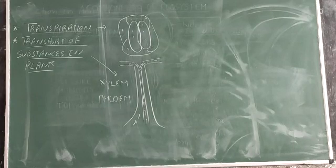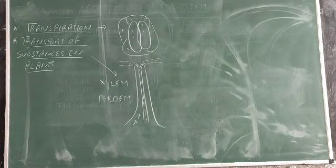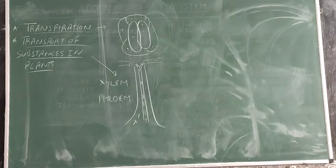Xylem actually forms a continuous network of channels that connect root to the leaves through the stem and branches and thus transport water to the entire plant.